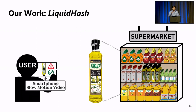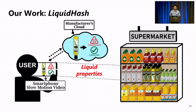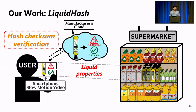What if you could just simply take out a smartphone to take a video of an olive oil, and then the smartphone captures the liquid properties, which is the signature of the liquid content. Then it compares with the signature stored in the manufacturer's cloud to verify the liquid authenticity. This whole process is very similar to a software hash verification — hence the name, Liquid Hash.